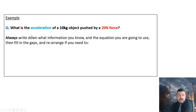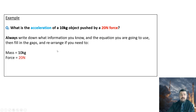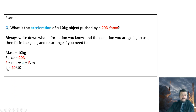Let's go on to something a little bit more difficult. What is the acceleration of a 10 kilogram object pushed by a 20 Newton force? This is a formula rearrange. We go through the same process: write down the information — mass is 10 kilograms, force is 20 Newtons. The base equation is force equals mass times acceleration. Rearranging to make acceleration the subject: acceleration equals force divided by mass. Plugging in: acceleration equals 20 divided by 10, which gives an acceleration of 2 metres per second squared.